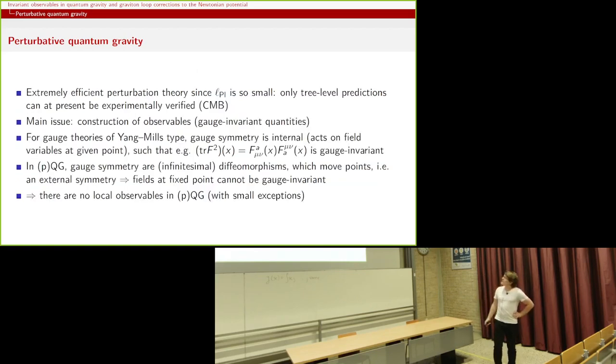It's extremely efficient. It's a very good perturbation theory. In fact, it's so good that only the tree-level predictions can be experimentally verified at the CMB, that's the CMB spectrum. And as we've heard in many talks, the main issue, or one of the main issues, is the construction of observables.